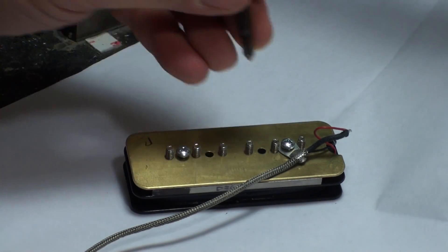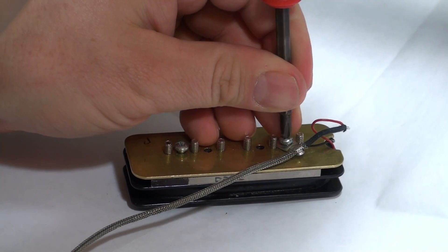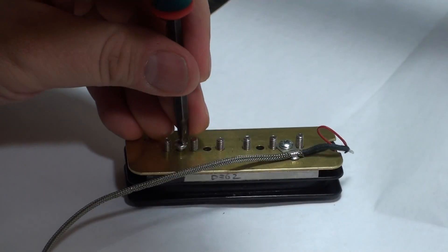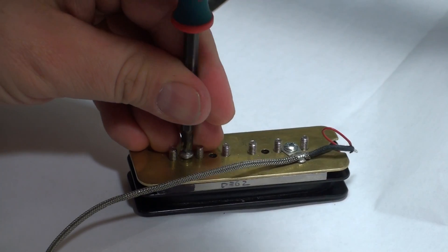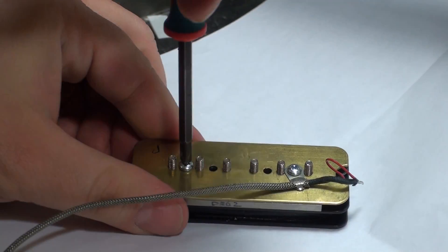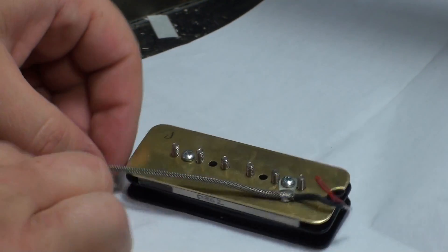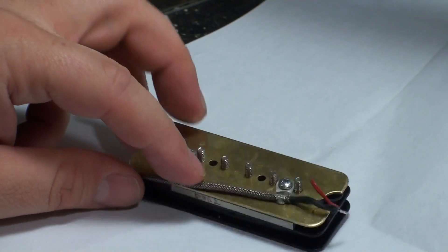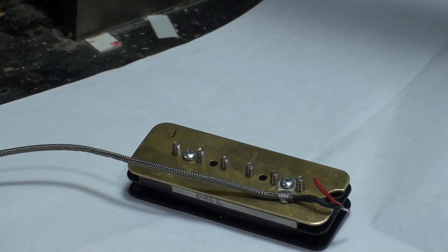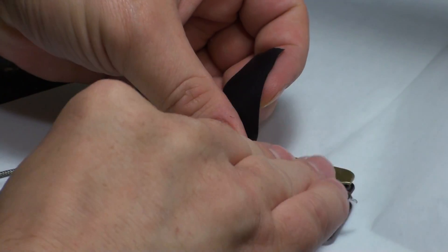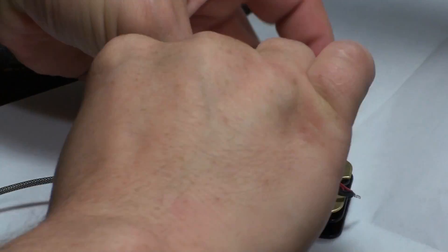Once the magnets are rotated, go ahead and snug those screws back down. Then we want to take that wire there and keep it from moving around. I like to use a piece of tape or something.